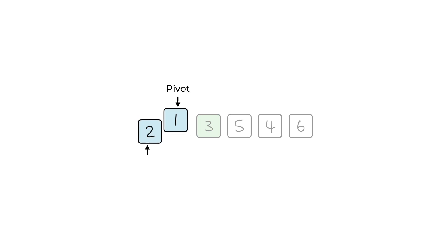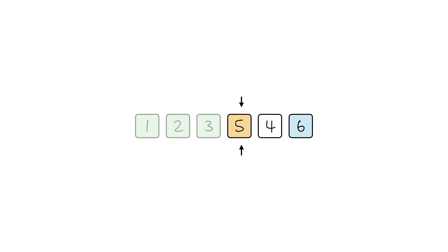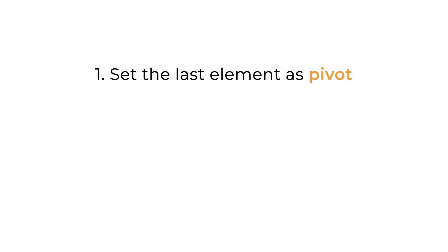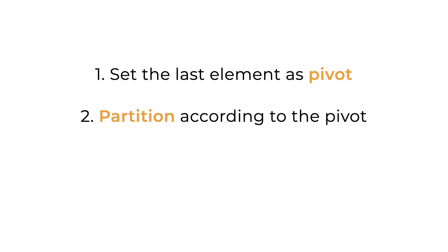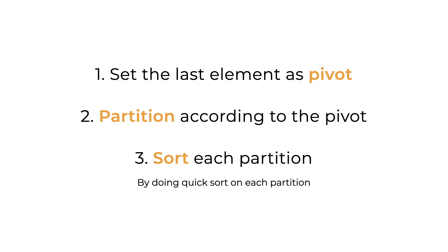For the Lomuto partitioning scheme, the idea is to start from the beginning of the array. If there's an element that is larger than the pivot, we save that element and find the next element that is smaller than the pivot before swapping them, as shown in the animation. Before writing pseudocode, let's note a few points: we use the last element as the pivot, partition according to the pivot, then sort each partition using quicksort on the left and right partitions.